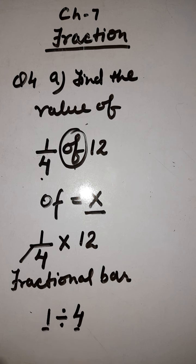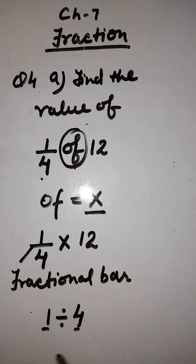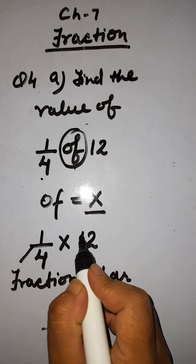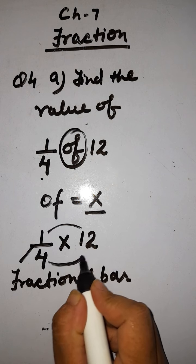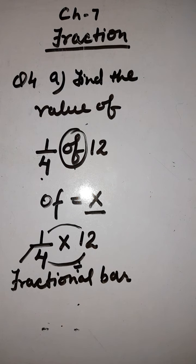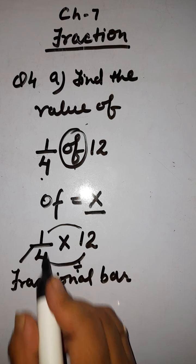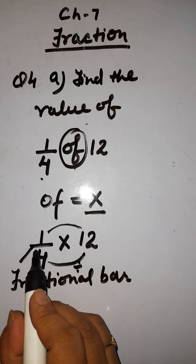So here, ये आपका multiplied by 12 है. आप 12 multiplied by 1 — इन दोनों को भी multiply कर सकते हो, either आप इसे directly divide कर सकते हो. Two methods से आपका solve होता है. Last tutorial class में मैंने आपको same question ऐसे सिखाया था: 12 multiplied by 1 is equal to 12. So here 12 is in the numerator, fractional bar है, और उसके नीचे आपका 4 है.